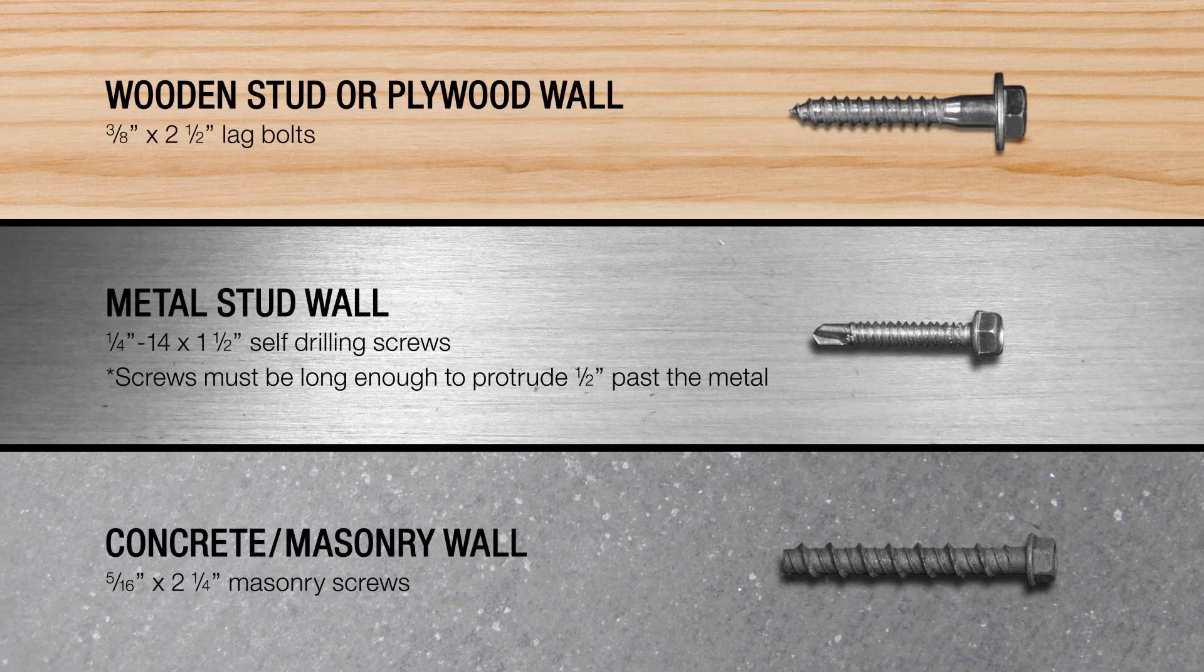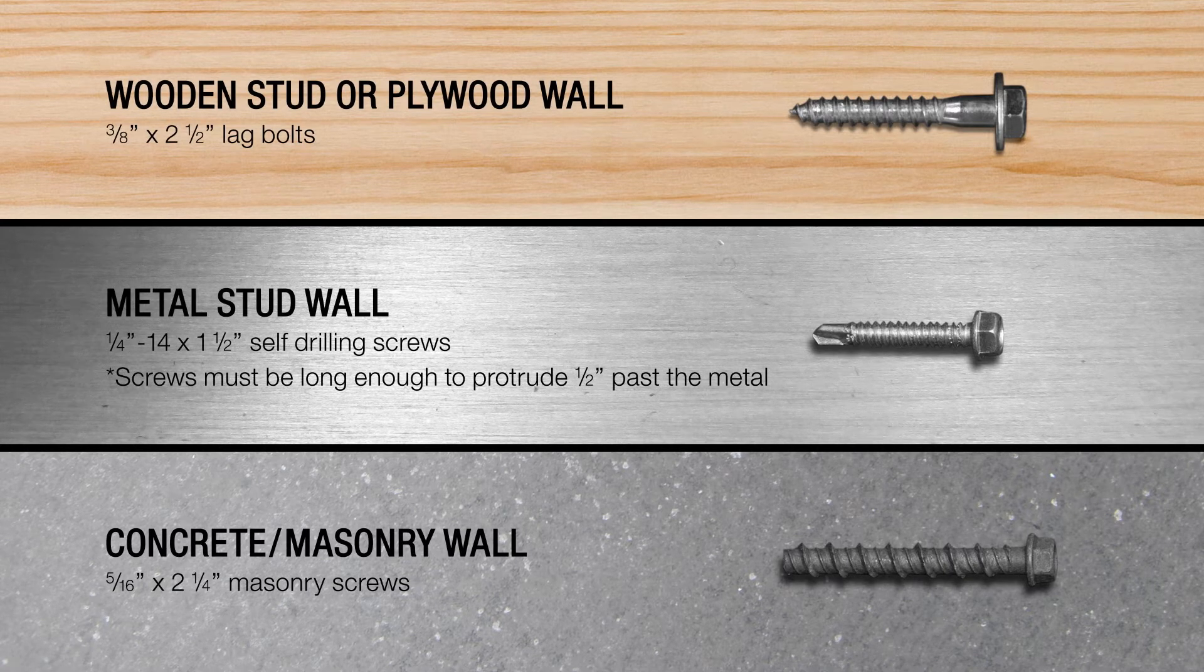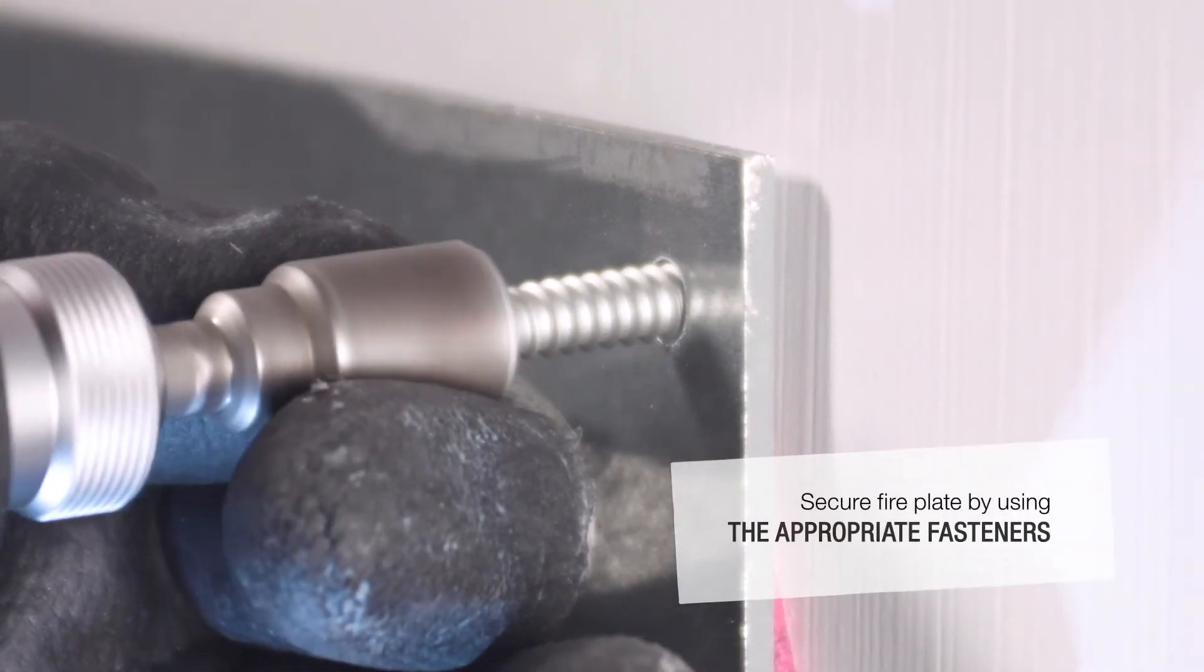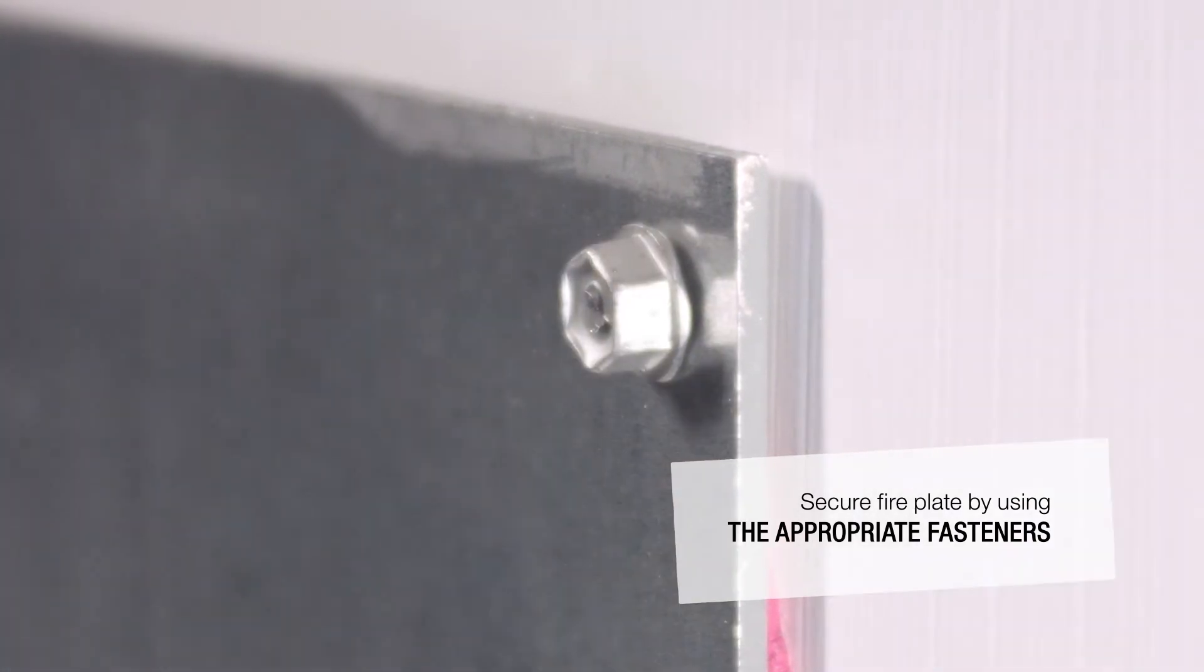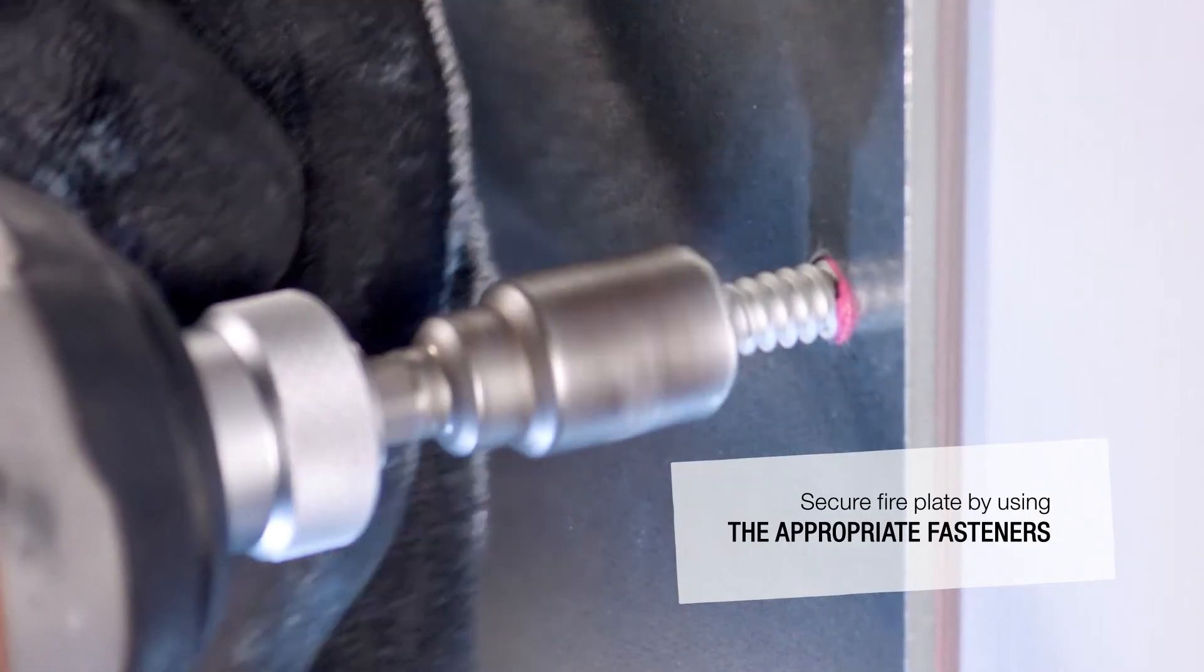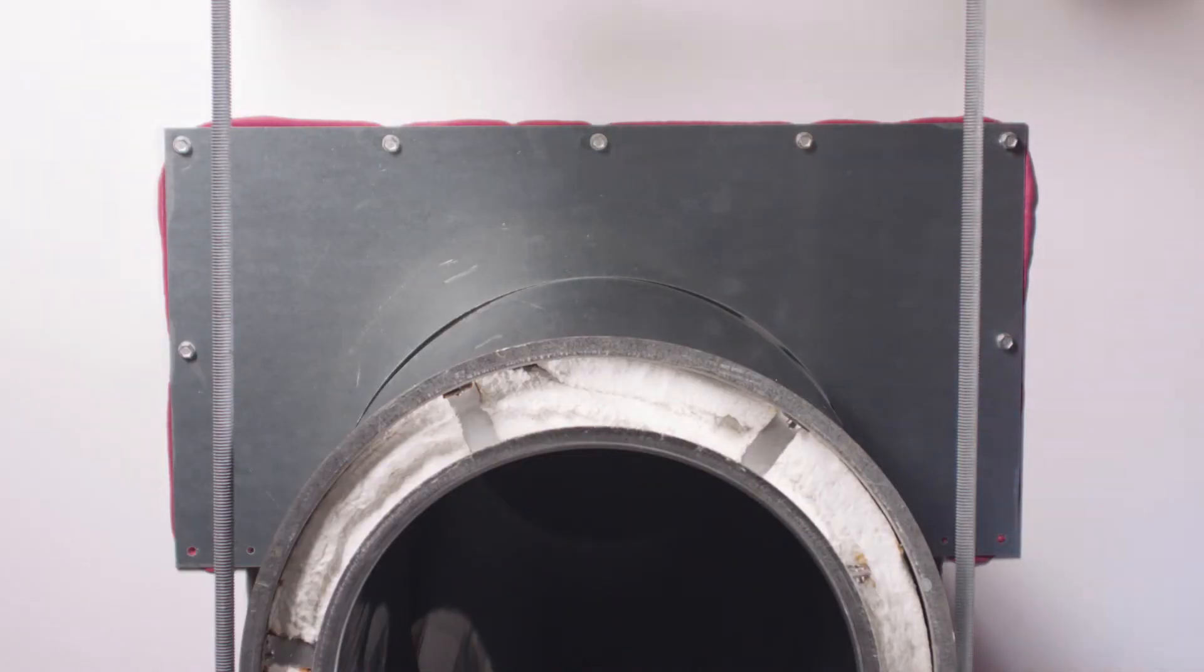Intumescent should come through the holes and protrude along the edges of the first fireplate. Make sure to use the appropriate hardware for each wall type. Secure the fireplate to the wall using the appropriate fasteners along the outside edge. Do not install hardware along the bottom edge of the fireplate.